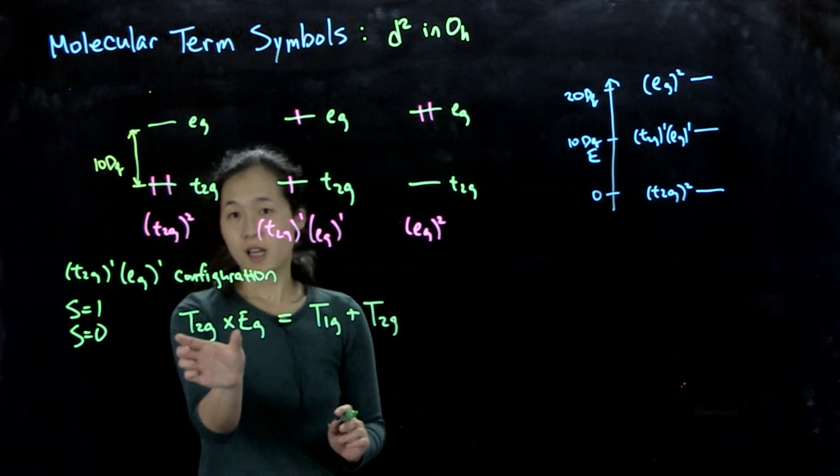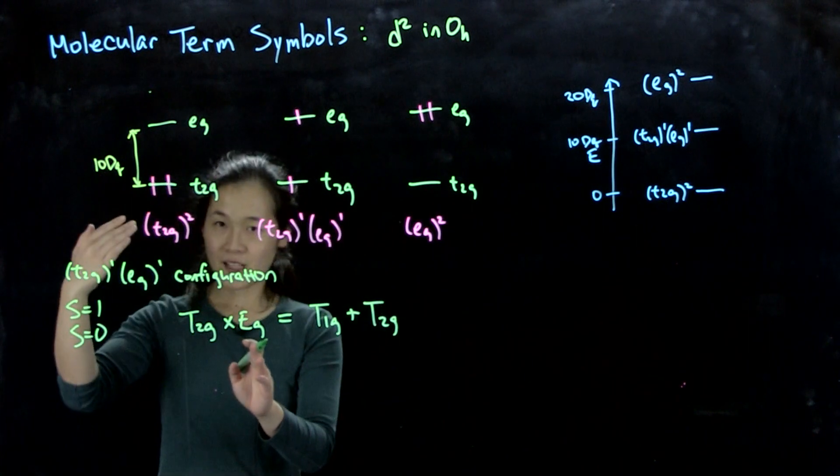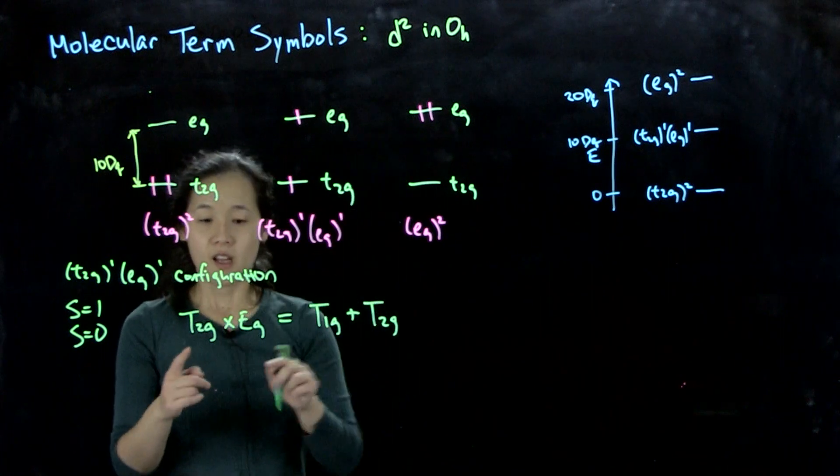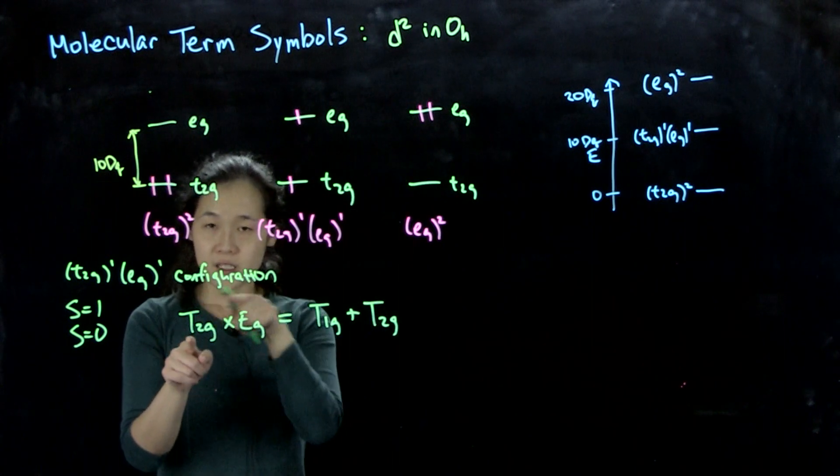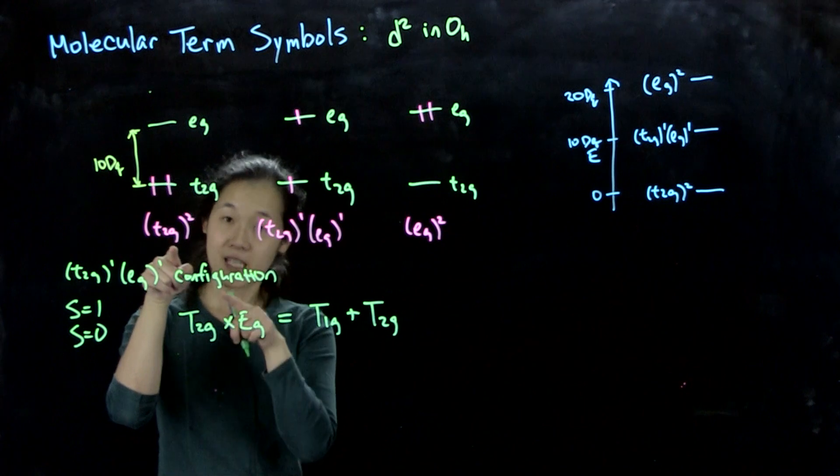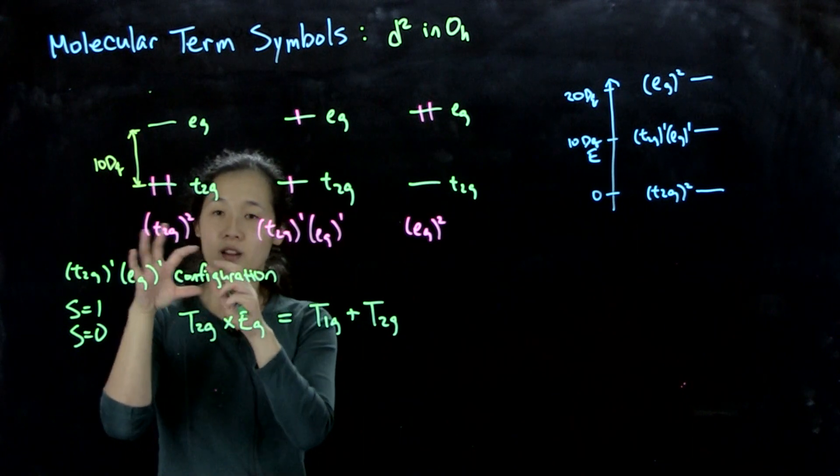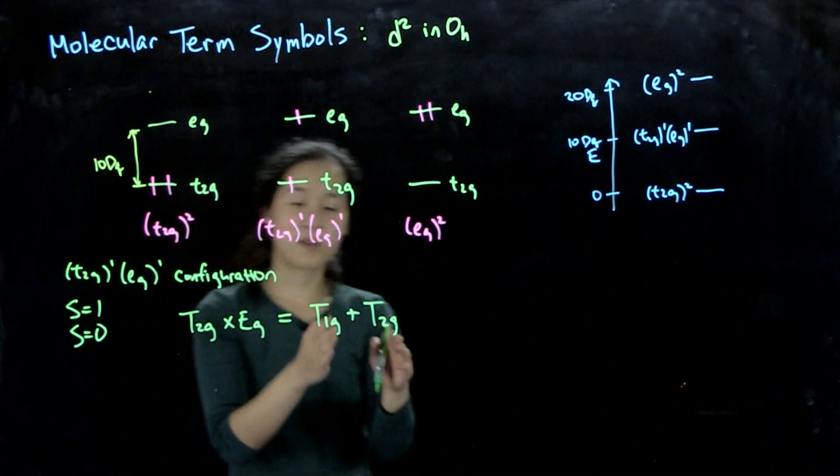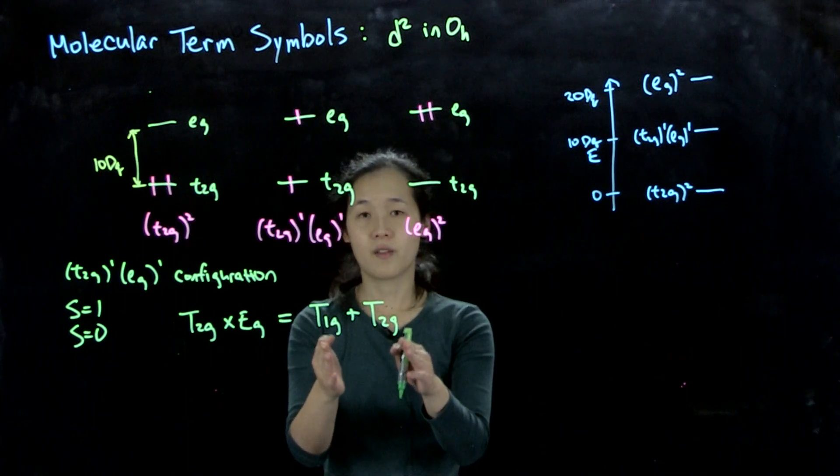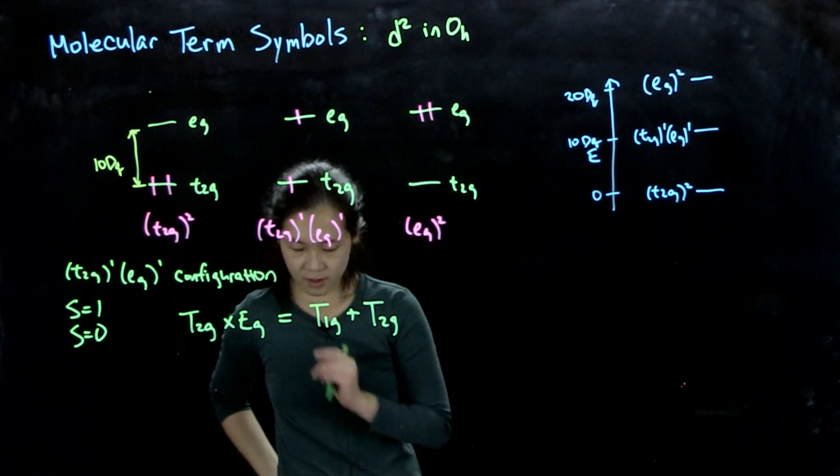And then if you multiply this out and then reduce down, decompose down to the sum of irreducible representations, what we get out is this multiplies out to be t1g plus t2g. So this is our direct product. Again, what you do is you go to your character table in octahedral, and then you multiply under each column the t2g character by the eG character of each column. Then that adds up to a certain number, and then we decompose down to this sum of irreducible representations, t1g plus t2g.